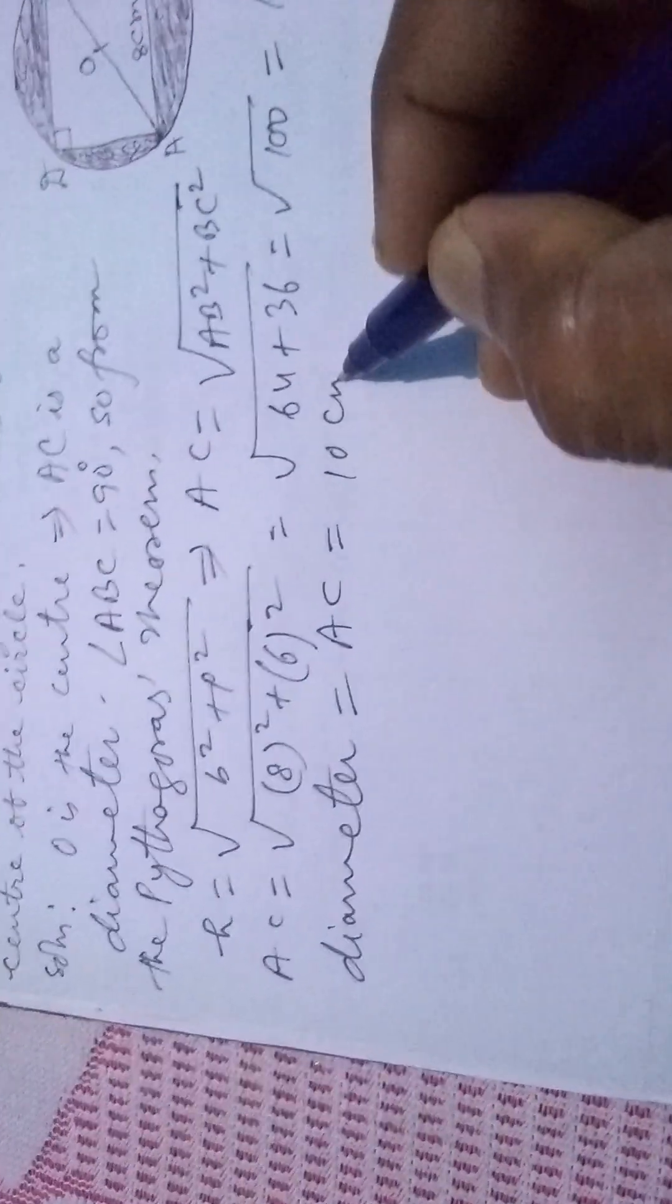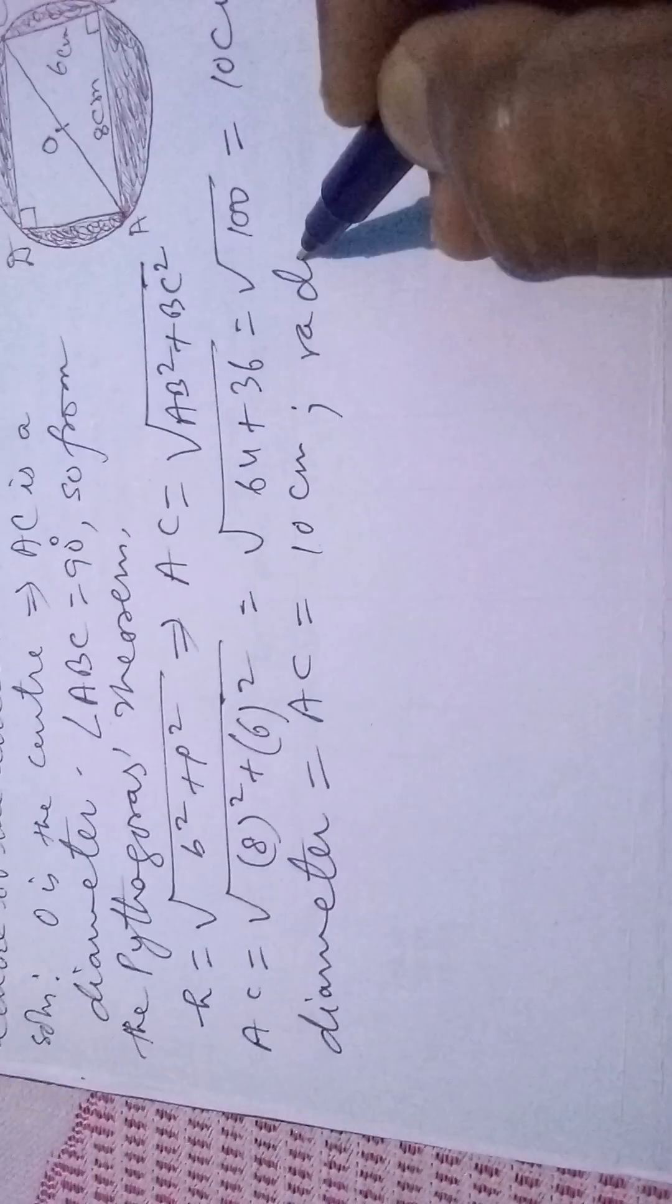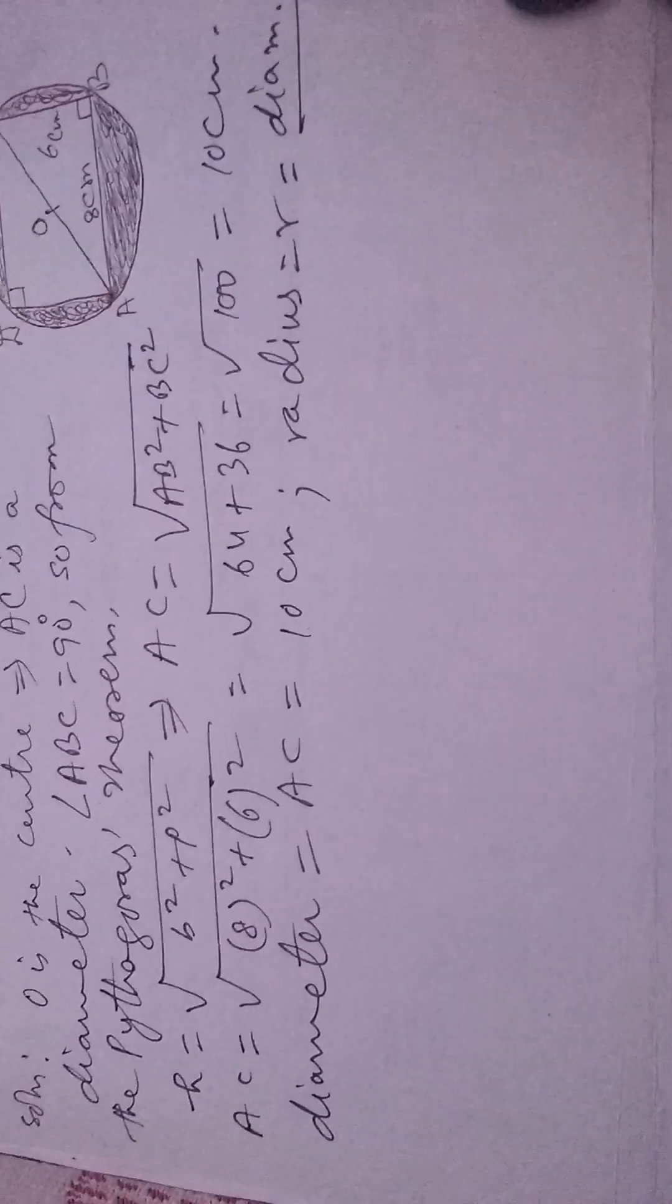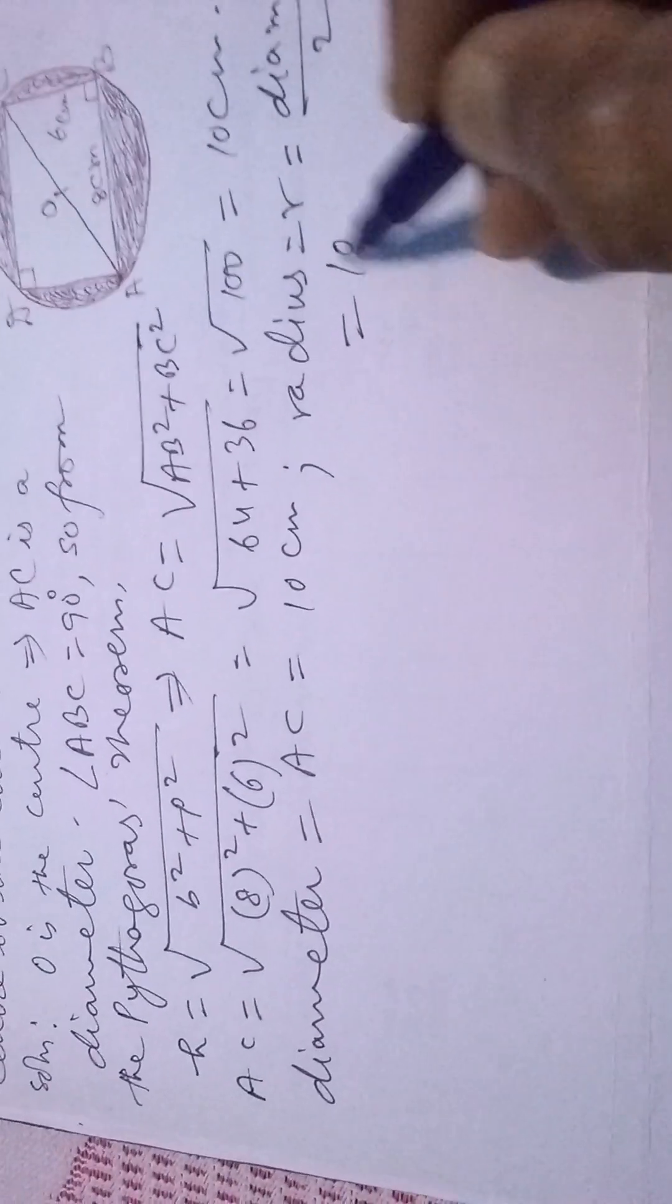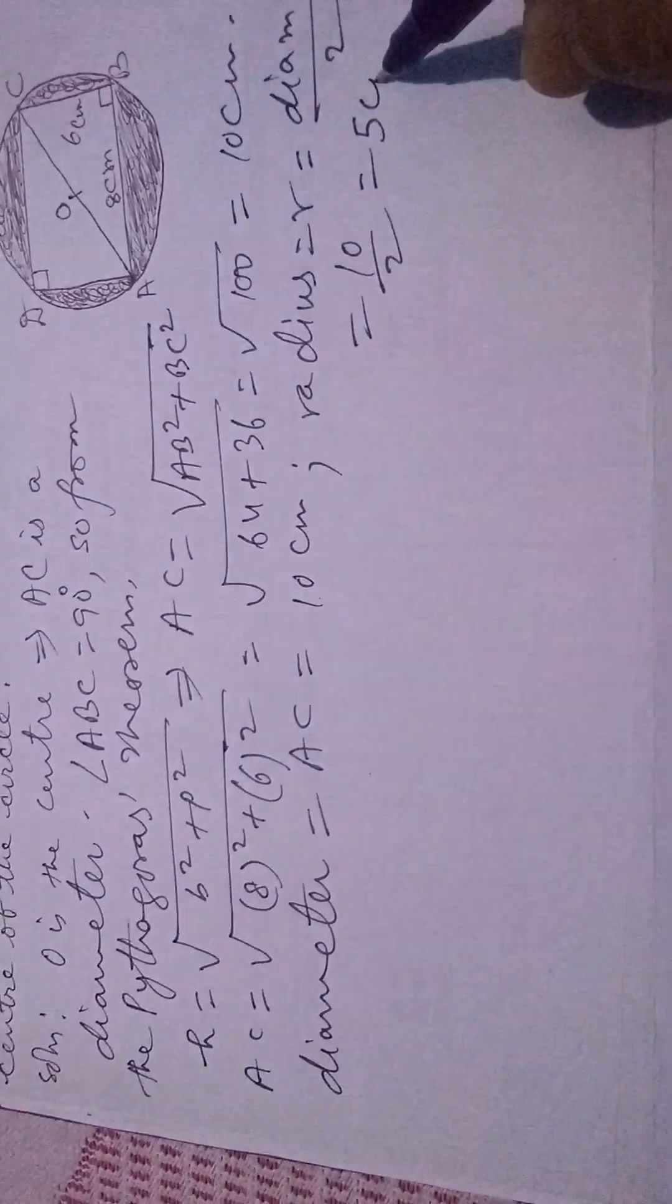Here diameter equals AC, that is 10 cm. Therefore, radius equals diameter by 2, that is 10 by 2 equals 5 cm.